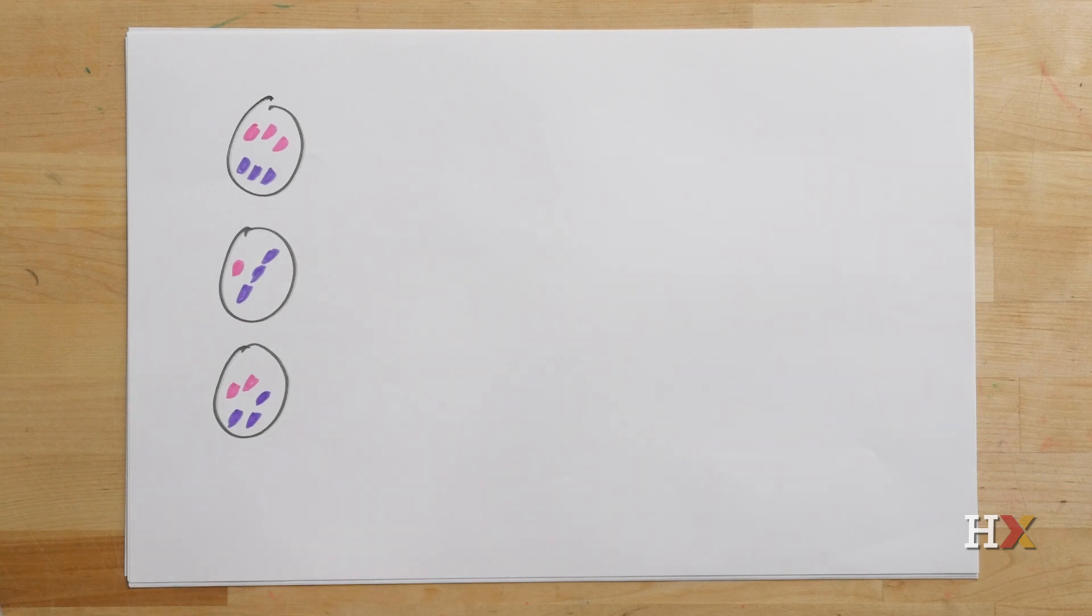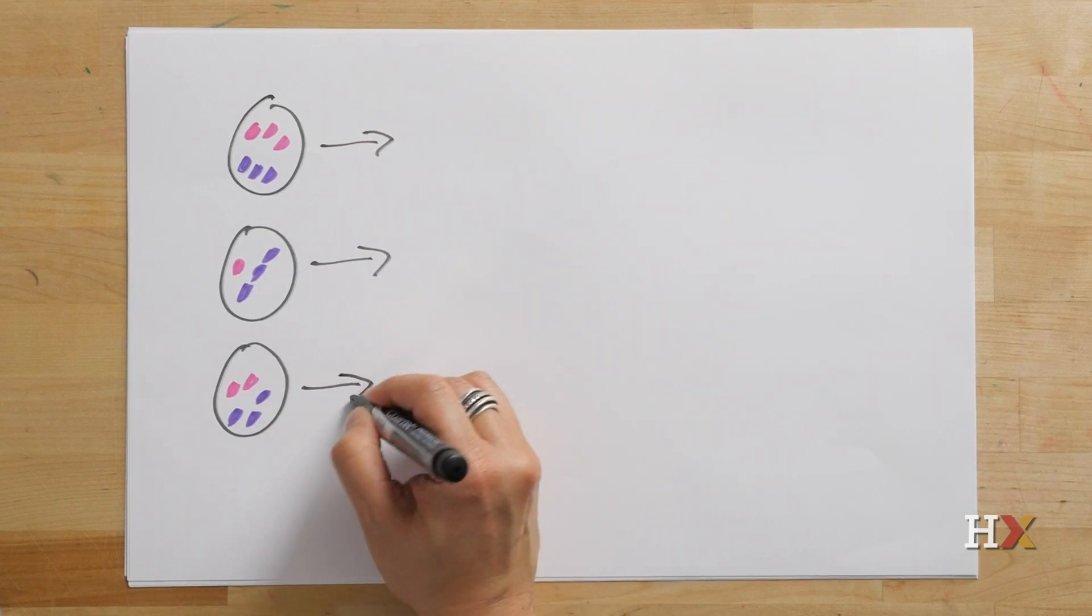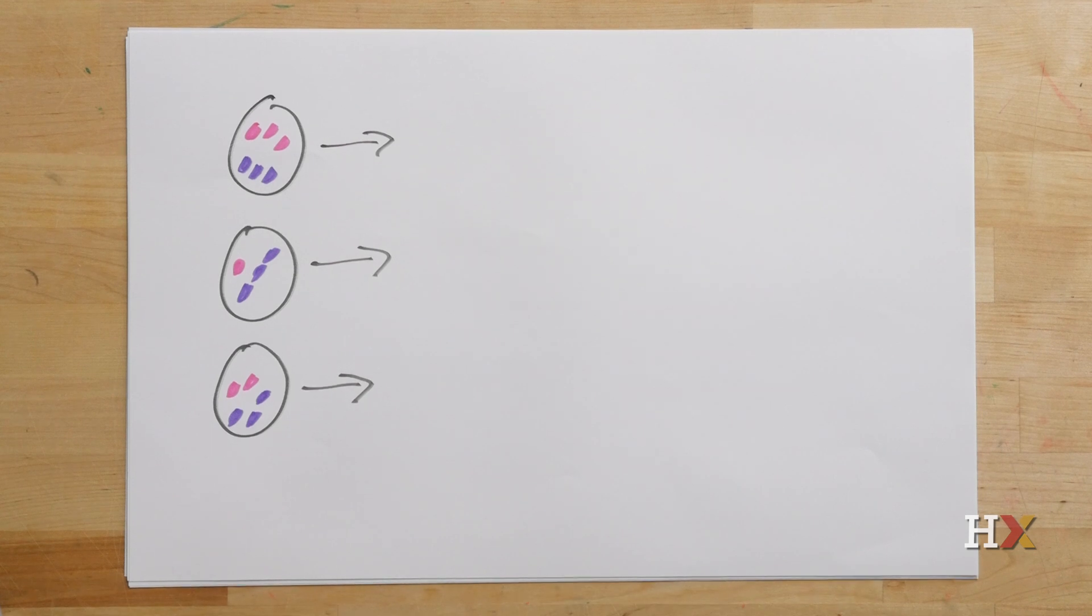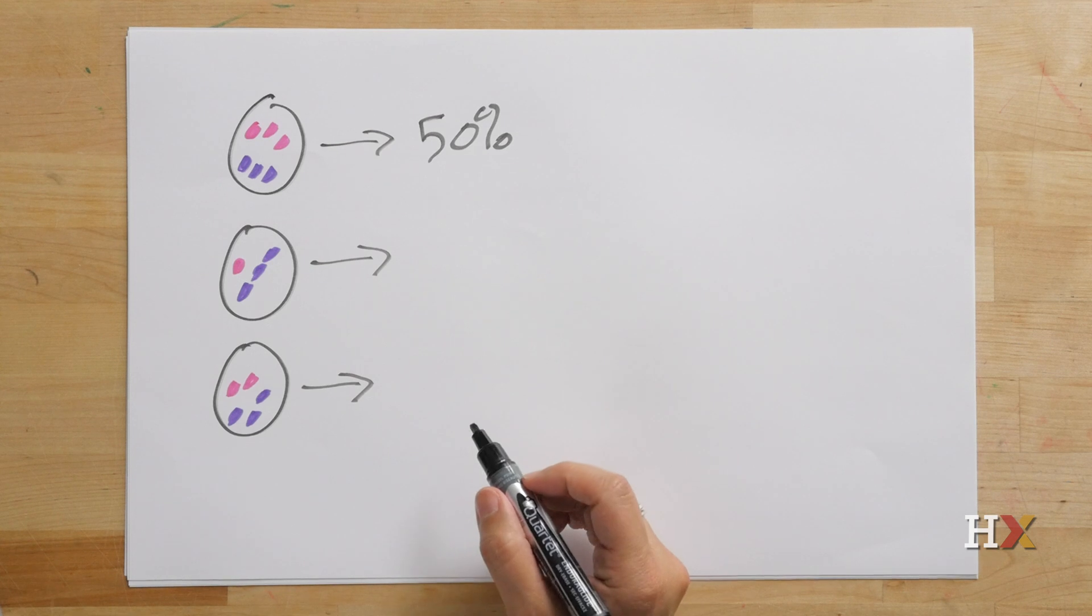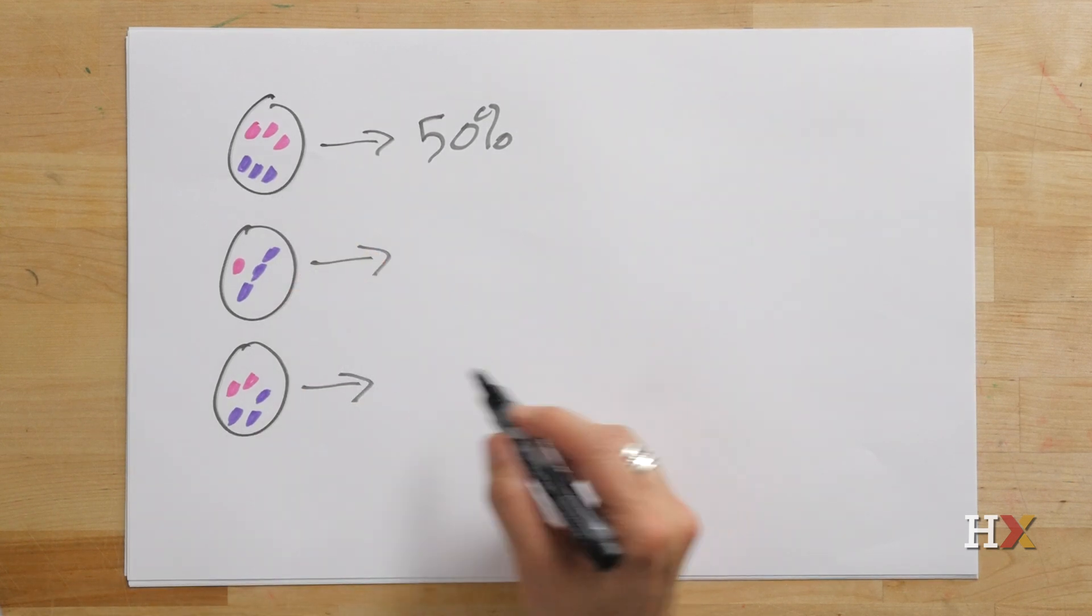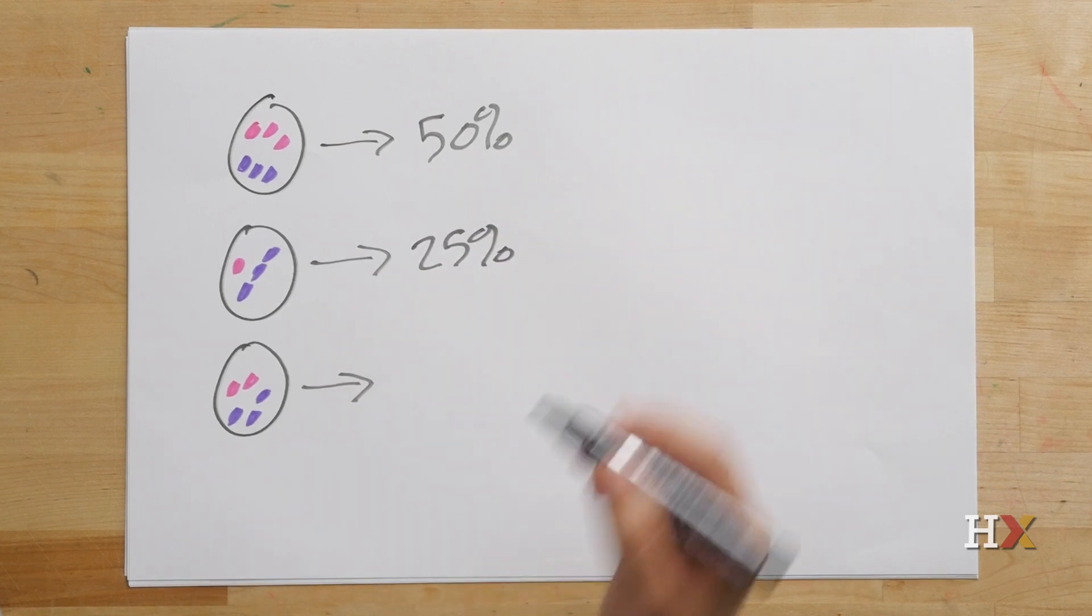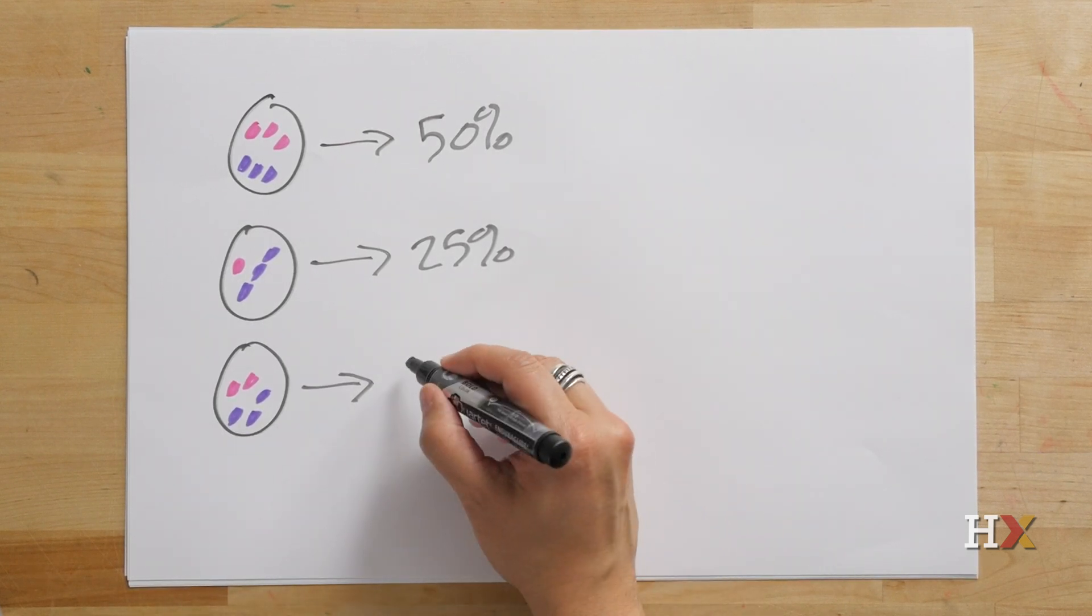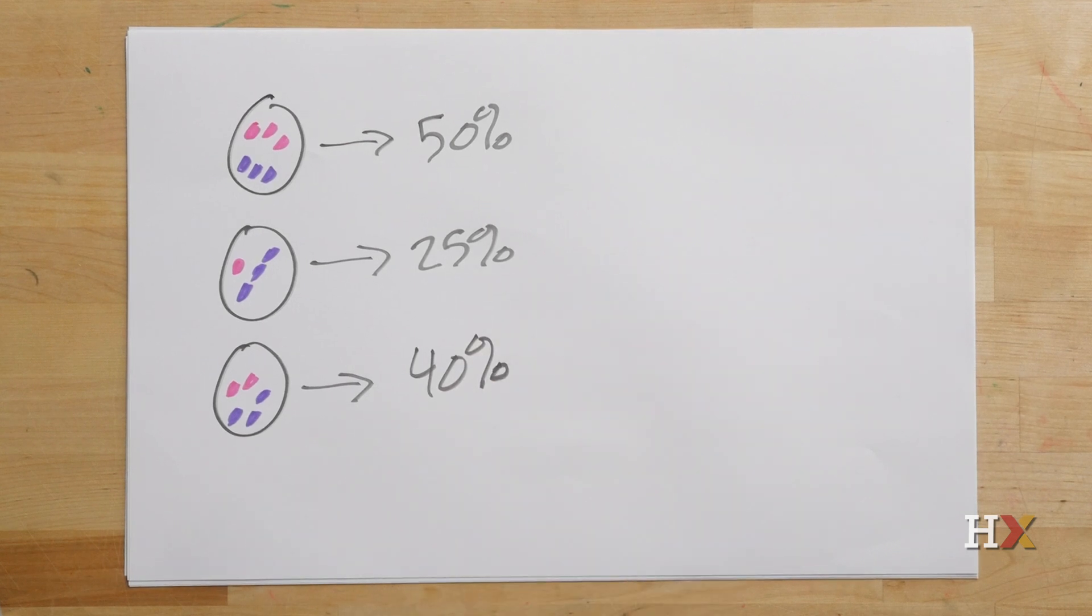Now, if you compare these three different eggs, what you'll see is that in this case, 50% of the mitochondria that that egg has are defective, right? In this case, we're down to 25% are defective, one pink to three purple. And in this case, we see that 40% are defective.